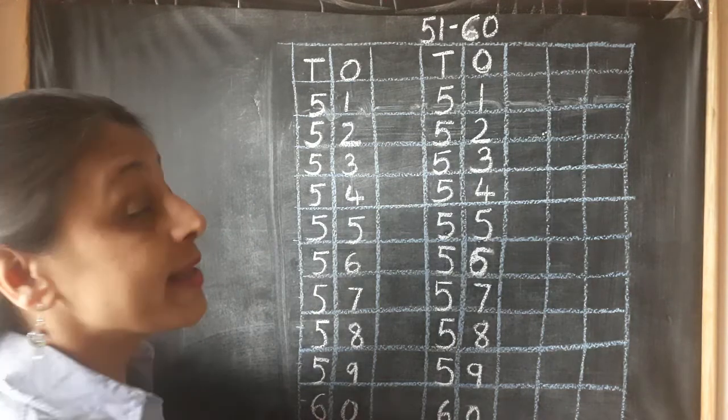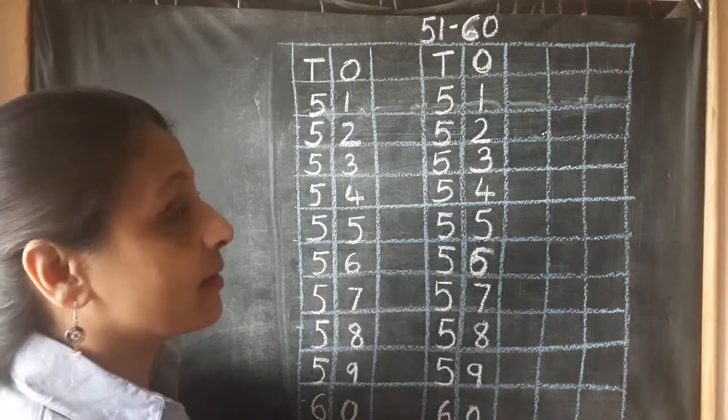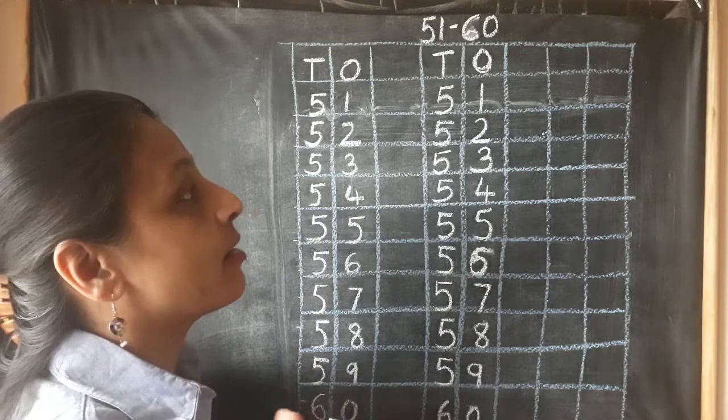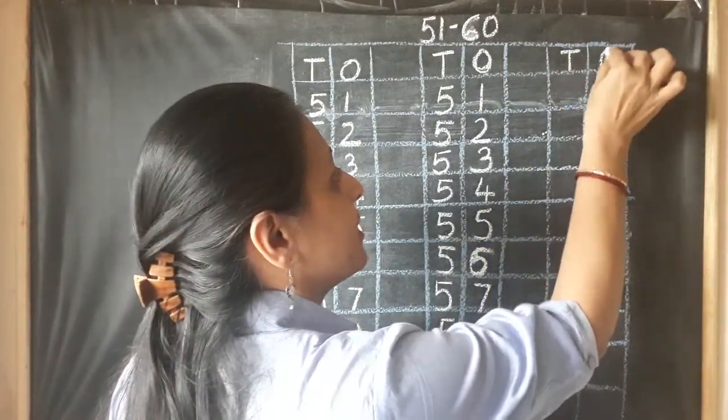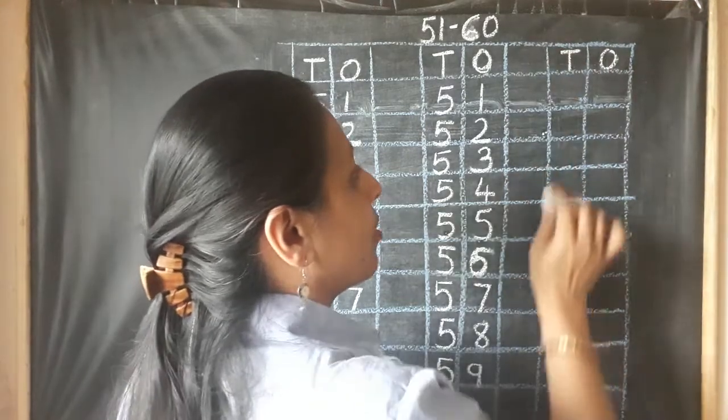Now, once more I am going to write and this time you are going to say numbers loudly. I will write numbers under T and O box. I have left one column in the middle.